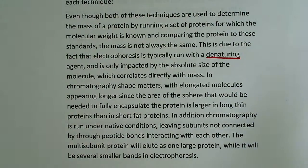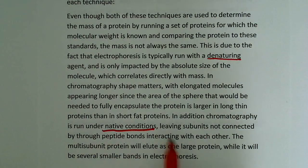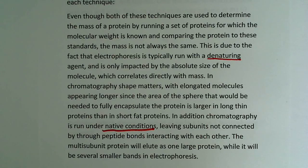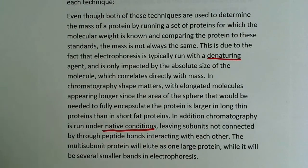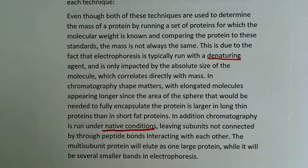In addition, chromatography is run under native conditions, meaning the protein still has its three-dimensional structure and the non-covalent interactions between subunits remain intact. A multi-subunit protein will elute as one large protein in chromatography, while in electrophoresis it will appear as several smaller bands. The denaturing agent used in electrophoresis separates the subunits, which is why you get multiple smaller bands instead of one band for the entire intact protein.